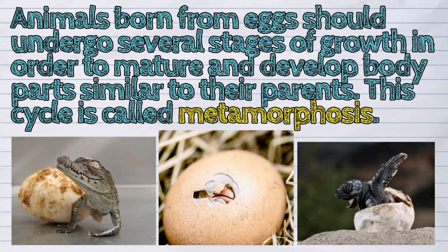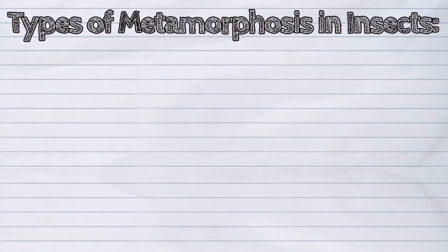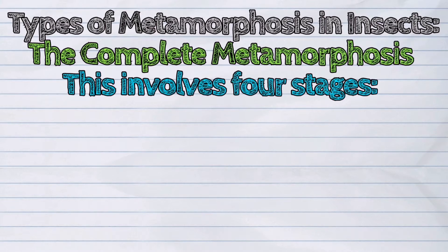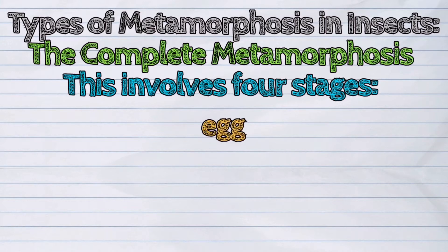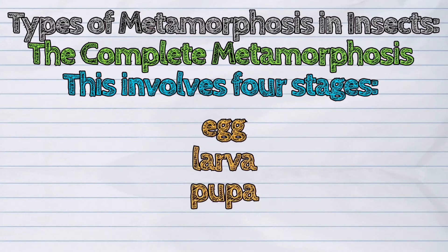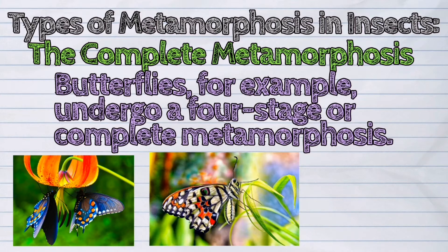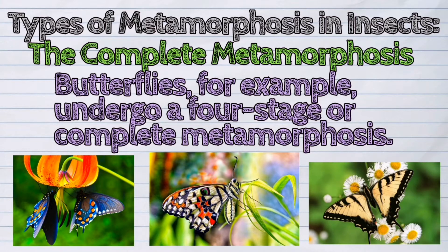There are two types of metamorphosis in insects. The first one is the complete metamorphosis. This involves four stages: egg, larva, pupa, and adult. Butterflies, for example, undergo a four-stage or complete metamorphosis.